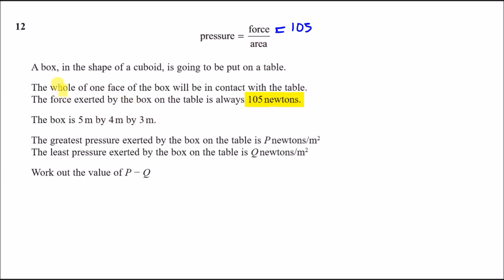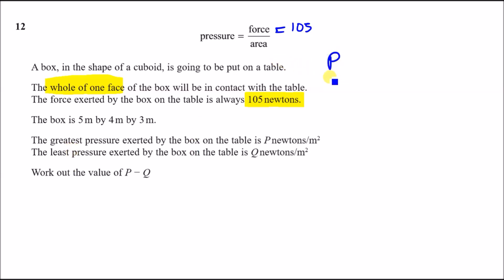Since we're dealing with area (not volume), we only need the area of one face. The greatest pressure comes from the smallest denominator — the smallest face — and the least pressure comes from the largest face.